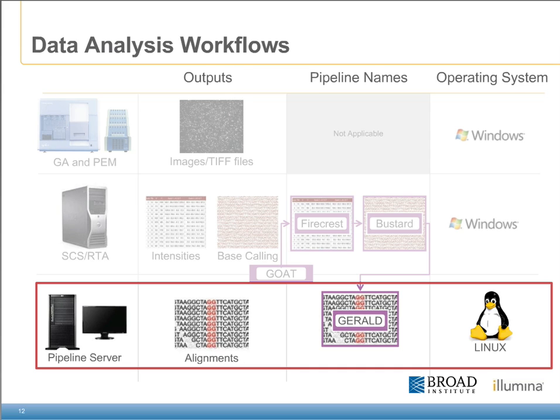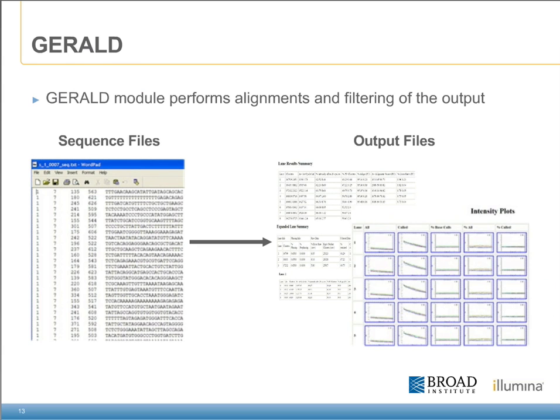This includes the segment of the pipeline server, or the module called Gerald, which performs the alignments. The pipeline server package, which contains the Gerald module, is currently only available for the Linux operating system. The Gerald module performs the alignments and some basic filtering of the sequencing output. Gerald takes the sequencing files produced by either RTA or Bustard as an input and produces a folder structure and output files along with some summary metrics of the run.